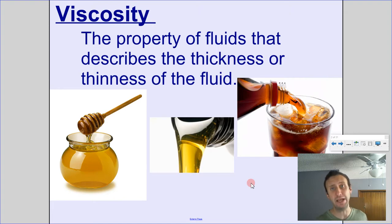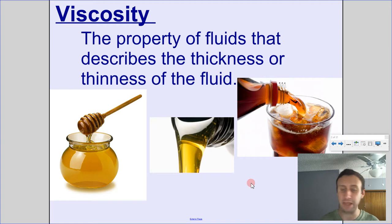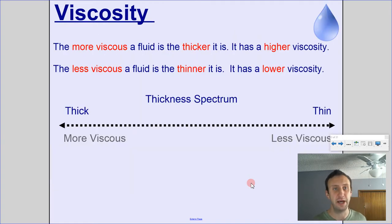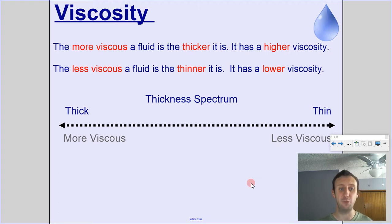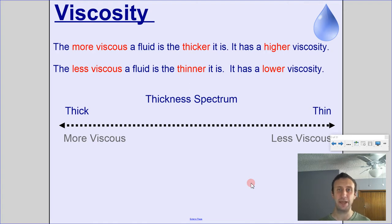We measure viscosity by looking at the flow rate of different fluids. The more viscous a fluid is, the higher its viscosity — the thicker it is.